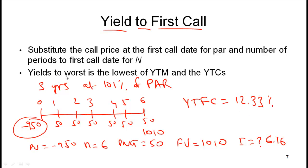Yield to worst is the lowest of all the YTMs and yield to calls. If you have a first call, a second call after four years at 100% of par, and then a YTM assuming you hold till maturity, you use this procedure to calculate all yield to call figures, and yield to worst is simply the lowest yield among all of them.